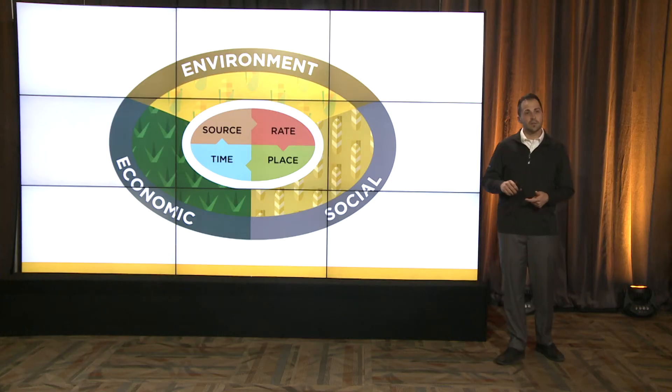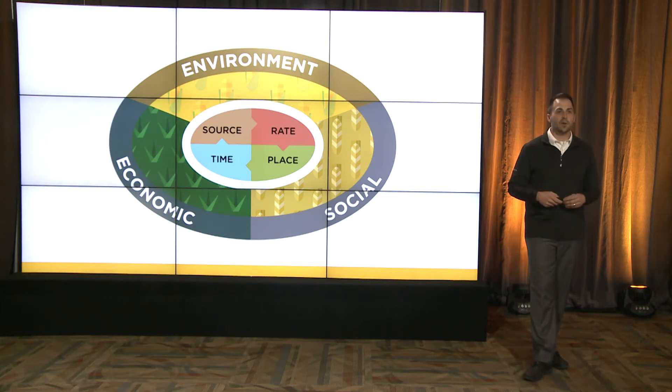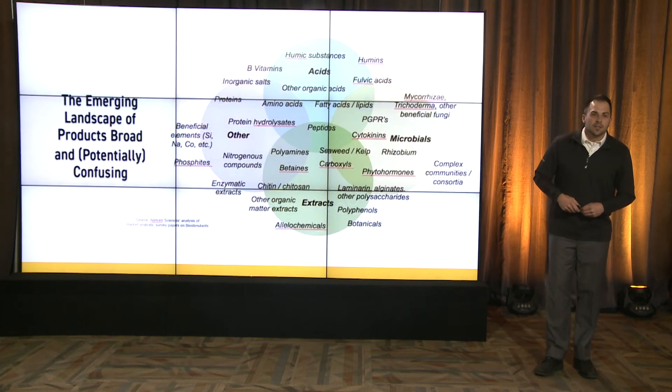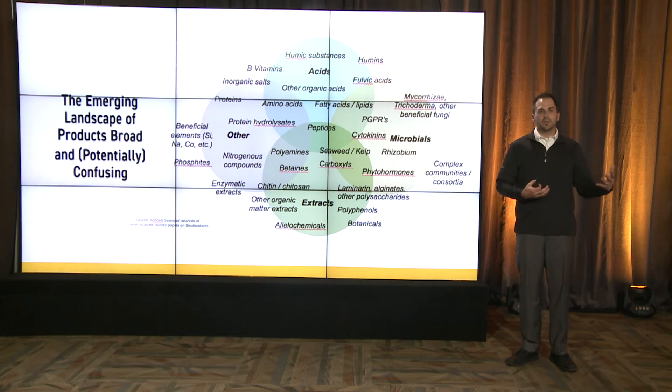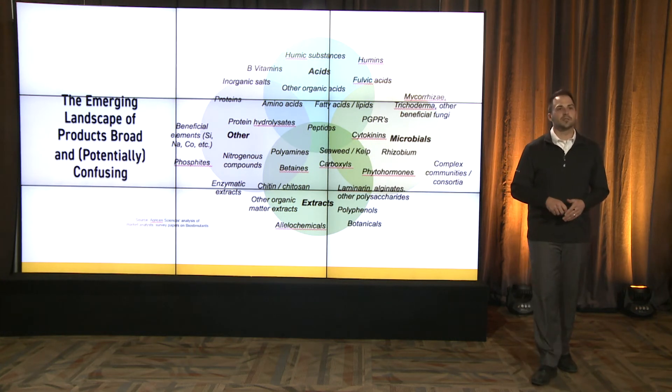As farmers, we don't want to put nitrogen out and risk losing it — that's a lost investment and lost yield potential. So we still have to look at all of the factors: environmental, economic, and social. Enter the four R's — the right source, the right rate, the right timing, and the right place. All very important. As we look at those management strategies, that should be common information as we make our nitrogen decisions.